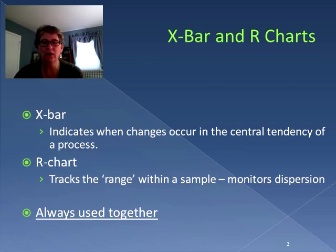If you recall, X-bar and R charts are always used together. They're used for variables inspection. The X-bar chart will indicate changes in the mean, which is the central tendency of the process, whereas the R chart tracks the range within a sample, so that monitors the dispersion. They're always used together so we have a much better view of the process.